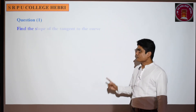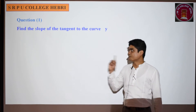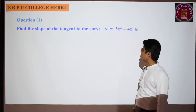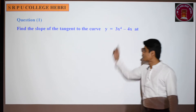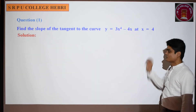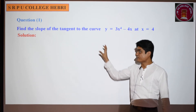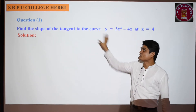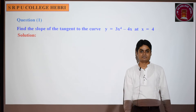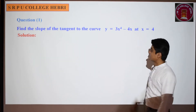Next, these are problems from the exercise. The first question from the exercise: find the slope of the tangent to the curve 3x⁴ - 4x at the given point. This is very simple - according to the previous example we are going to solve this problem. Differentiate this and substitute x = 4.